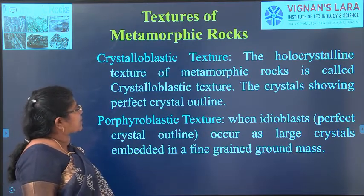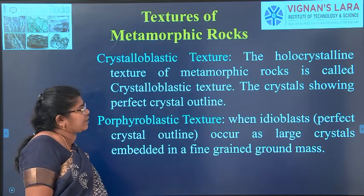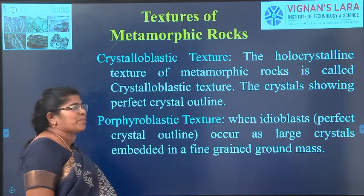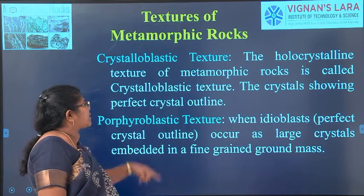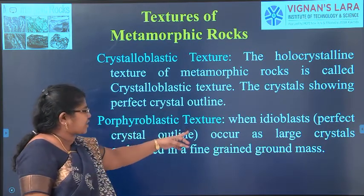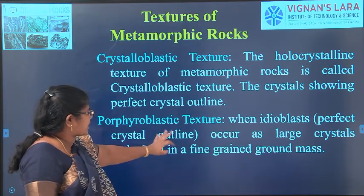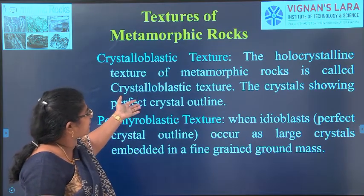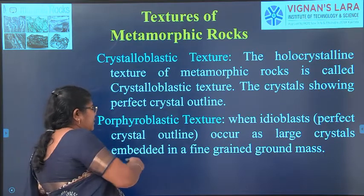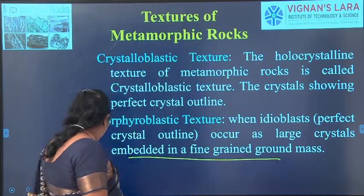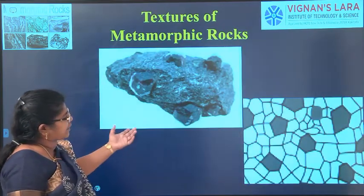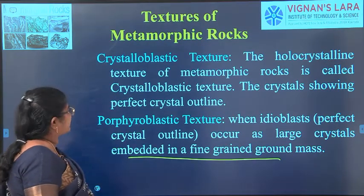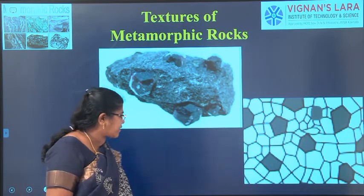What are the textures of metamorphic rock? First, crystalloblastic texture — the wholly crystalline texture of metamorphic rock is called the crystalloblastic structure, where crystals show a perfect crystal outline. Then porphyroblastic texture, where idioblasts — perfect crystal outlines — occur as large crystals embedded in a fine-grained groundmass. You can see examples here: this is crystalloblastic texture and this is porphyroblastic texture.